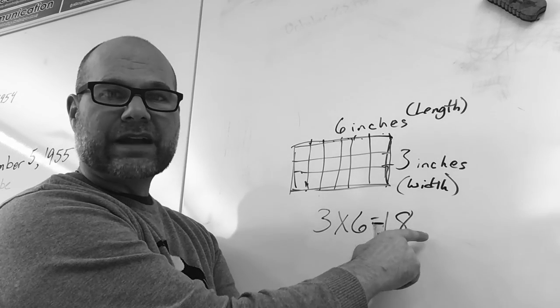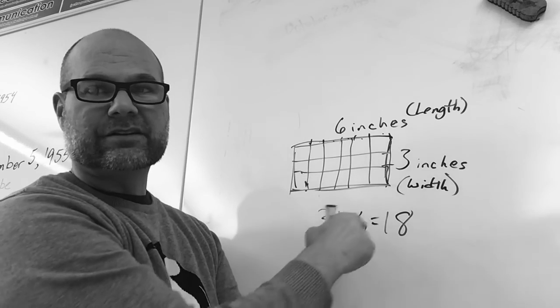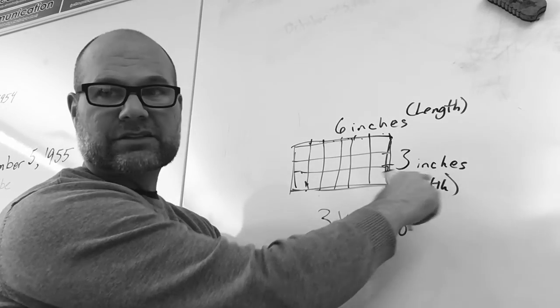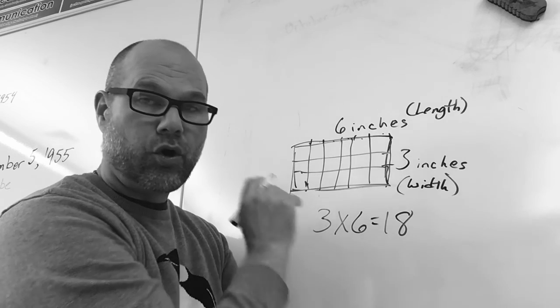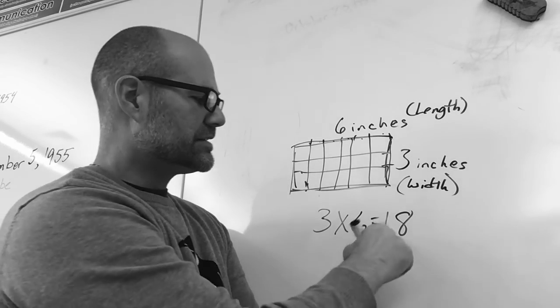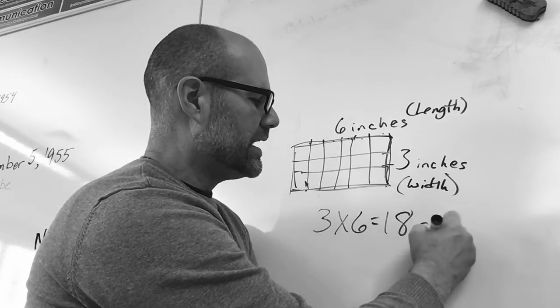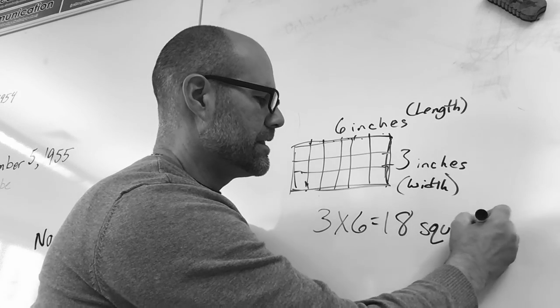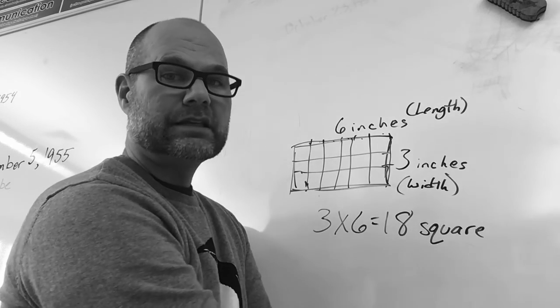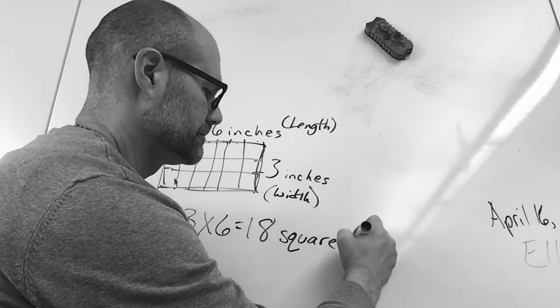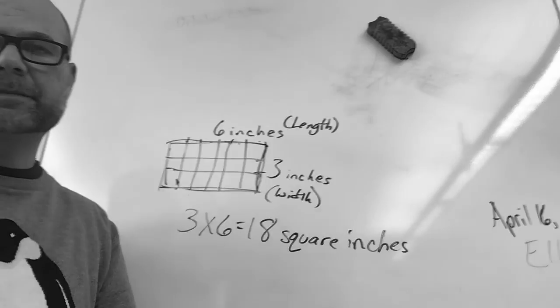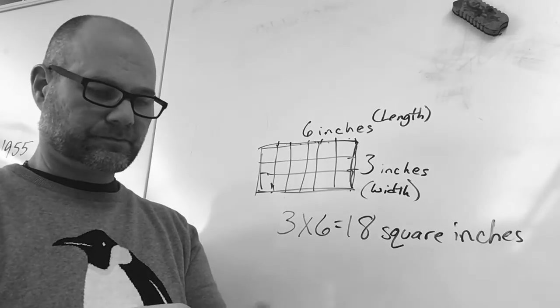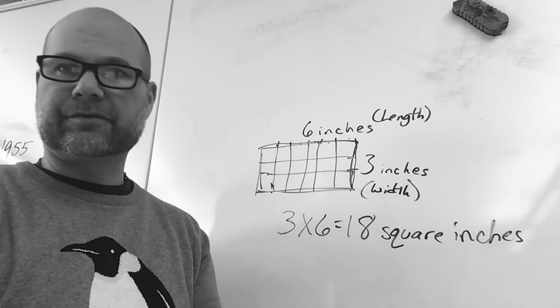Now, because we are figuring out how many squares are in here, just like we want to use the correct units, we're going to say what this 18 means. You always want to do that in math. So, this is actually 18 square, what? Square inches.